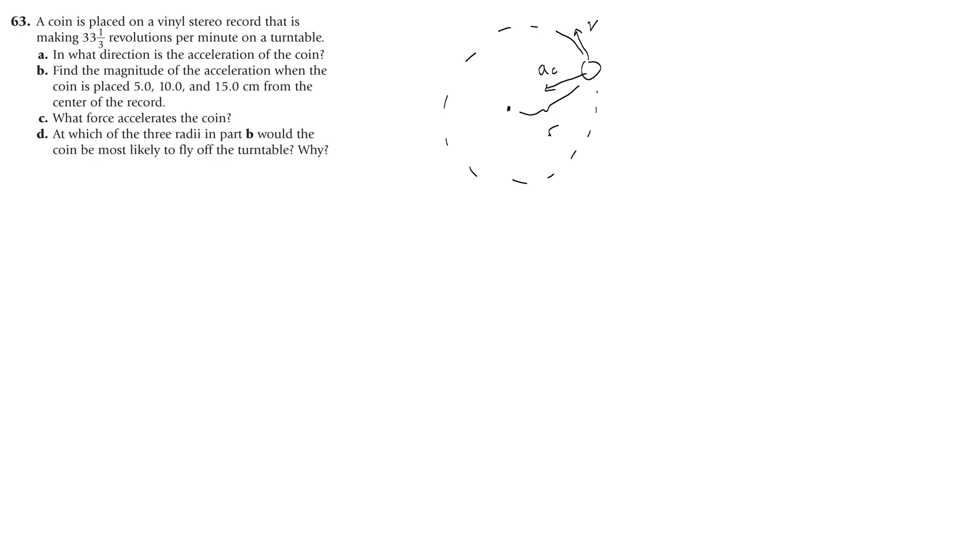Remember an acceleration is a change in velocity with time, in this case the velocity is just changing direction. There are two equations that we can use to get the centripetal acceleration, one is we take V, square it, and divide it by the radius of the circle.